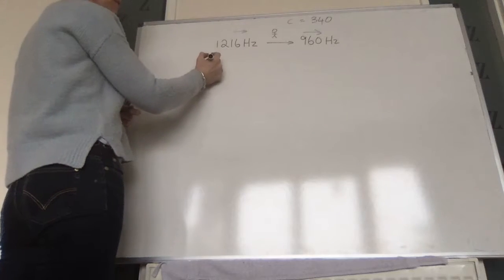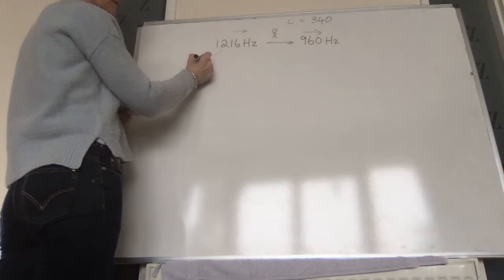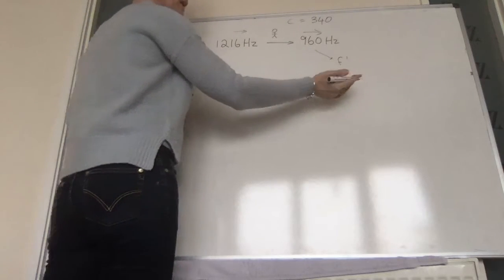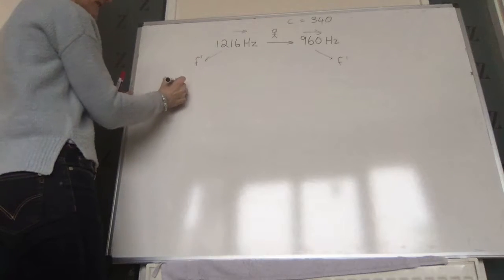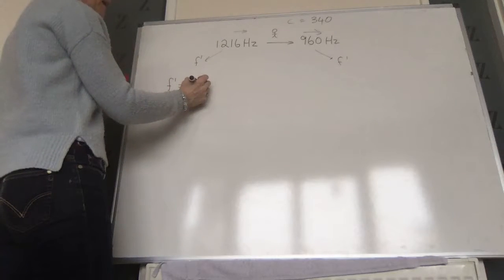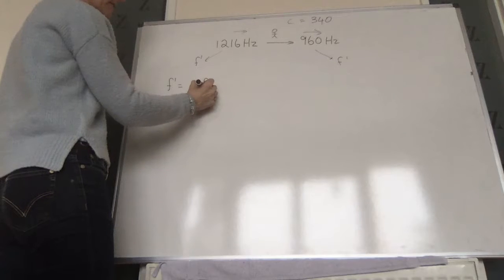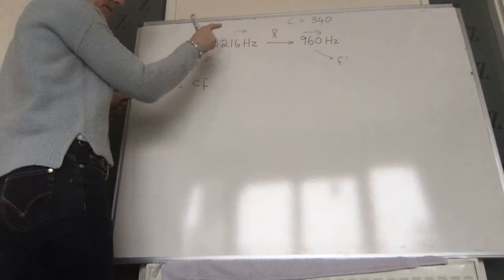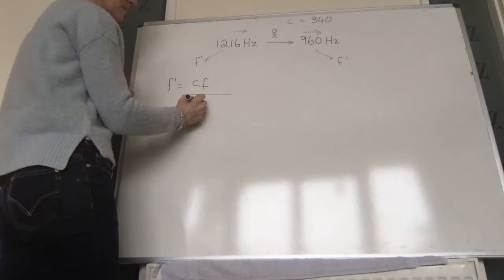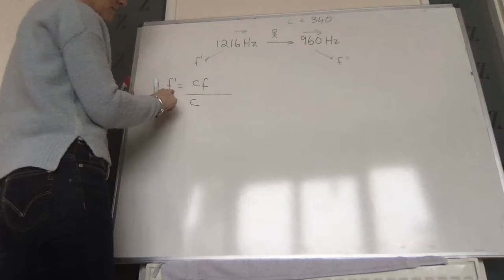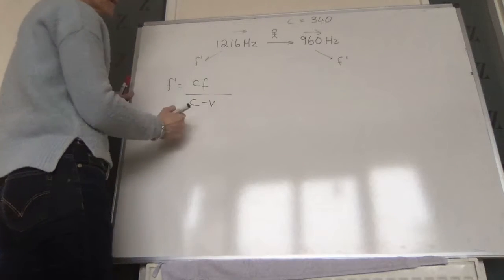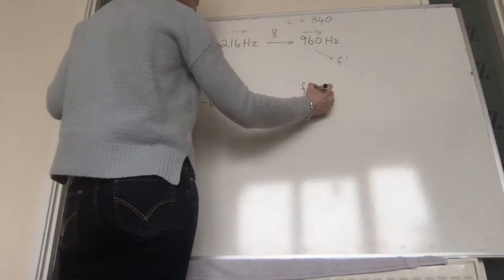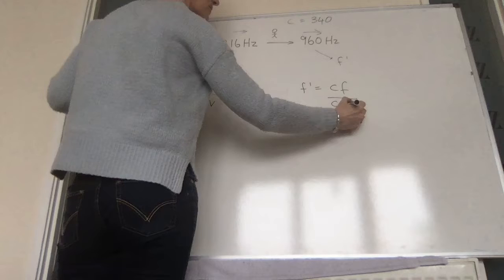1,216 Hz is the apparent frequency F-dash when the train is moving towards the observer, and 960 Hz is the F-dash when moving away. So: F-dash₁ equals C·F over (C minus V) — using minus because the source is approaching and we need a higher frequency — and F-dash₂ equals C·F over (C plus V) for the receding case.